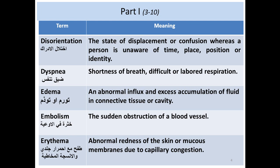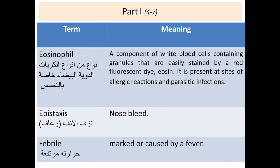Embolism is a sudden obstruction of a blood vessel by formation of a blood clot. Erythema is whenever there is abnormal redness of skin or a mucous membrane due to capillary congestion. Eosinophil is a component of the white blood cell count containing granules, and it is easily stained by red fluorescent diaeosin stain. It is usually present at the site of allergic reactions — as in patients with asthma, dermatitis, and rhinitis — they have a high eosinophil count, and also in parasitic infection.